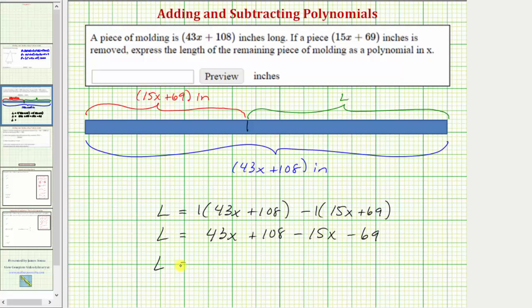And for our last step, we combine like terms. Notice how we have two x terms and we have two constants. 43x minus 15x is equal to 28x. And 108 minus 69 is equal to 39. So we have plus 39.